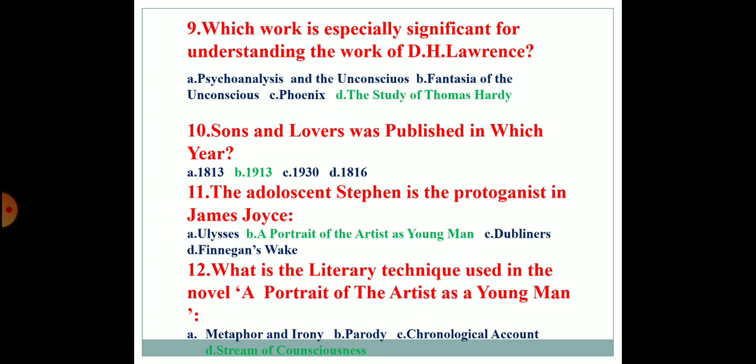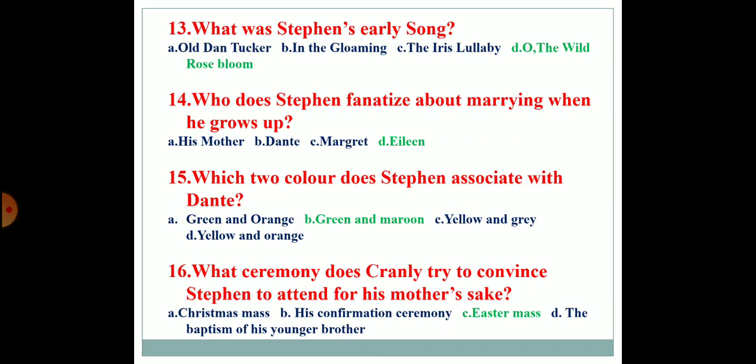The adolescent Stephen is the protagonist in James Joyce's A Portrait of the Artist as a Young Man. What is the literary technique used in the novel A Portrait of the Artist as a Young Man? Option D is the answer — stream of consciousness. What was Stephen's early song? His early song was 'Oh, the wild rose blooms.' Who does Stephen fantasize about marrying when he grows up? He fantasized about Eileen.